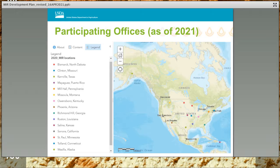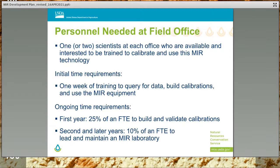Participating NRCS offices need at least one soil scientist who is available and interested to be fully trained on all aspects of the MIR method, including querying for calibration data, building calibrations, and using the MIR laboratory equipment. The training is a five-day course. For the first year, up to 25 percent of a full-time employee's time will be needed to build and validate calibrations. After the first year, the field office should plan on 10 percent of a full-time employee's time to lead and maintain the MIR field office laboratory.